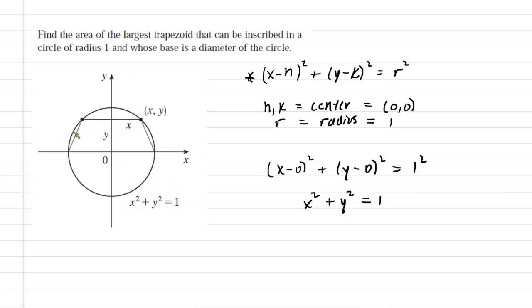Inside that circle, we've drawn a trapezoid and labeled a couple of dimensions. A point lies on both the trapezoid and the circle, so we can give it x and y coordinates. That means the horizontal distance is x and the vertical distance is y, which is also labeled on the other side.